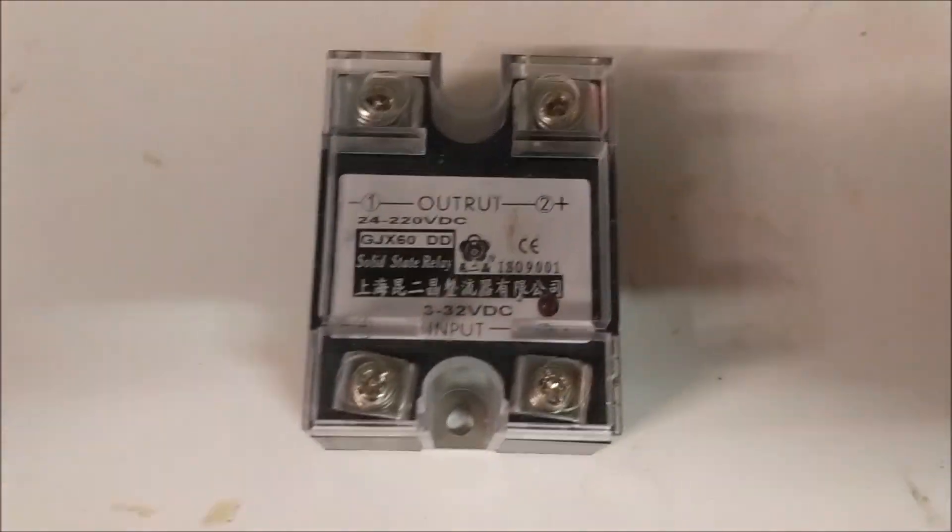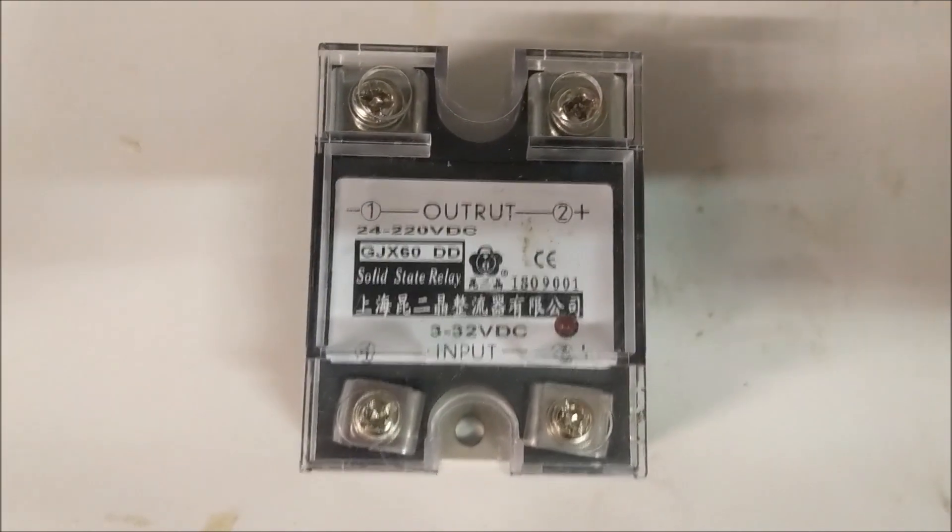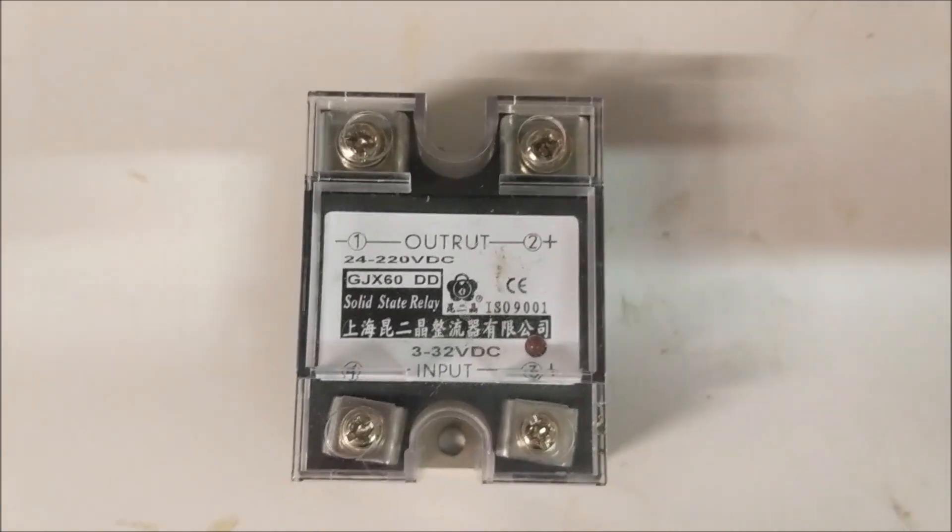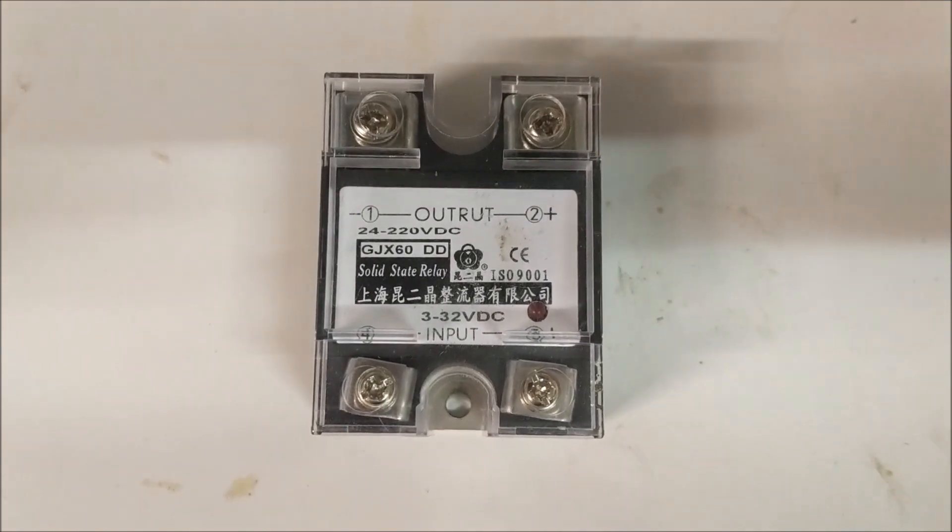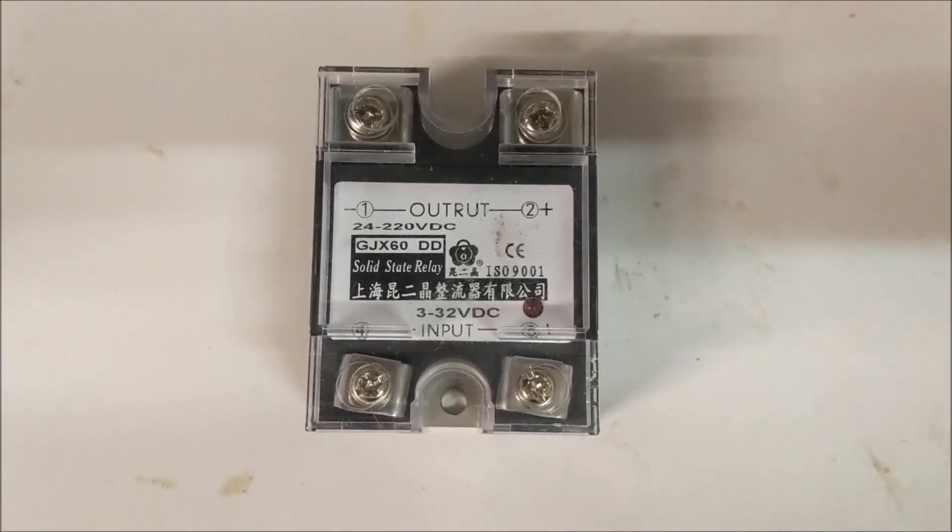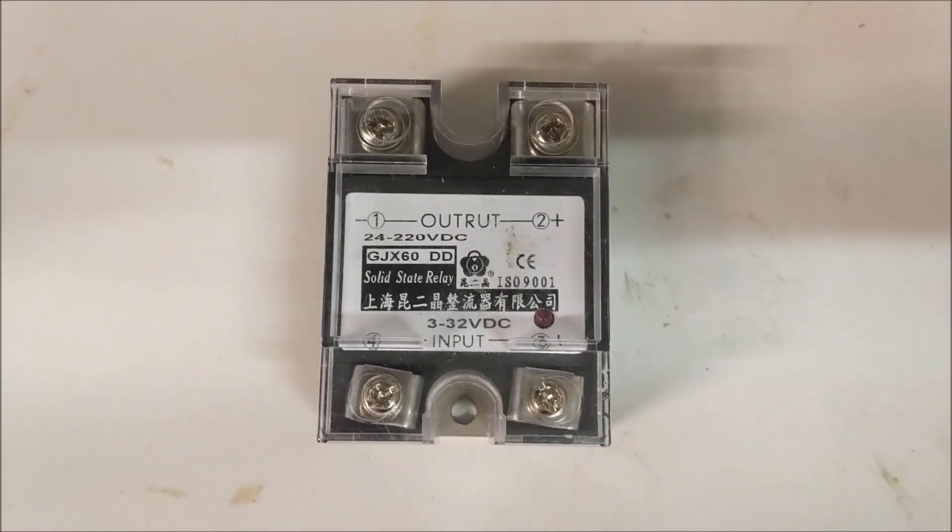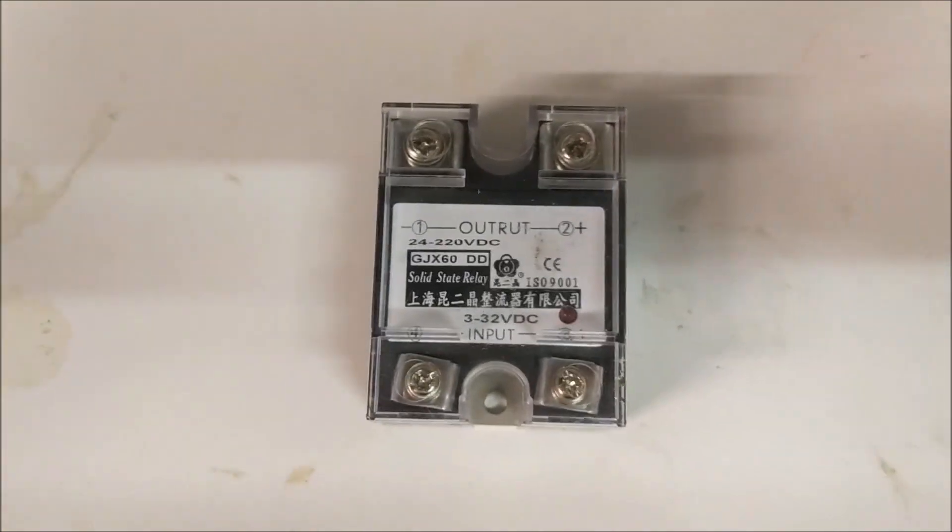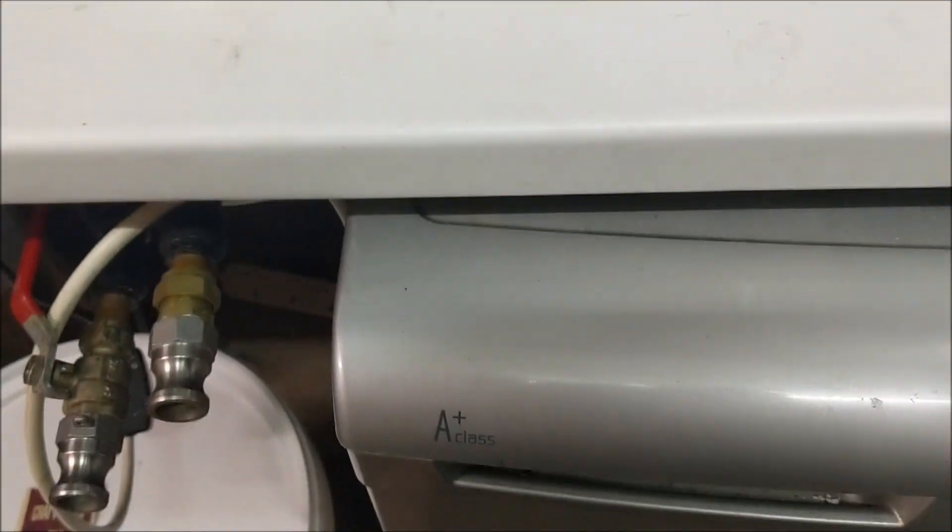The issue I had was with the SSR. Originally I had one of these SSRs—was slightly suspicious to start with since the output seems to be labeled 'out rut.' Under zero load with no heater, the output seemed to be working fine with just a multimeter. But as soon as you put a load on it, it just leaked so much that the heater never actually turned off, so the temperature just kept going up and up whatever the PID thought it was doing.